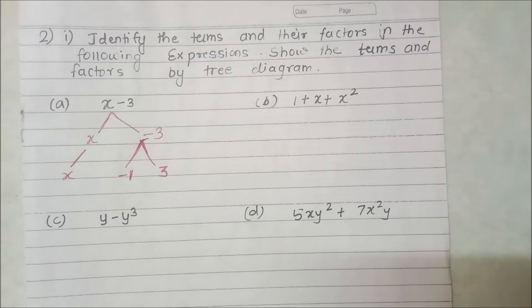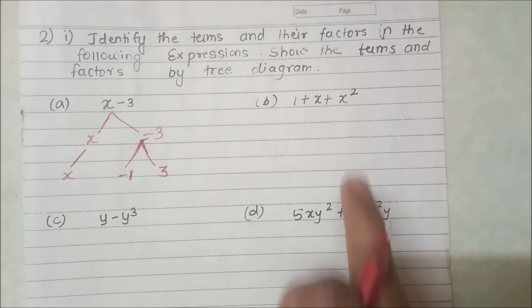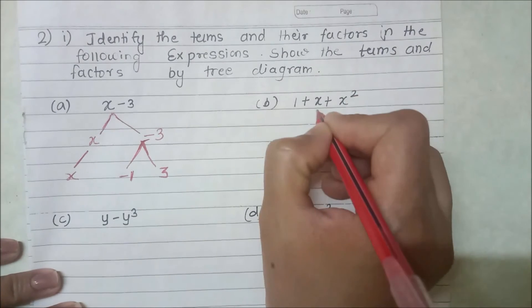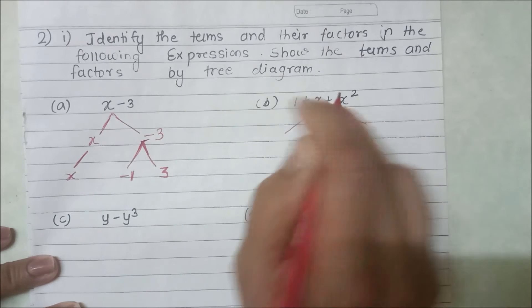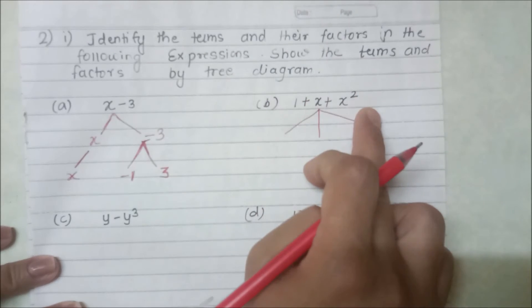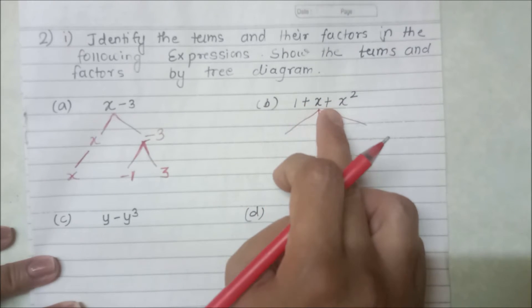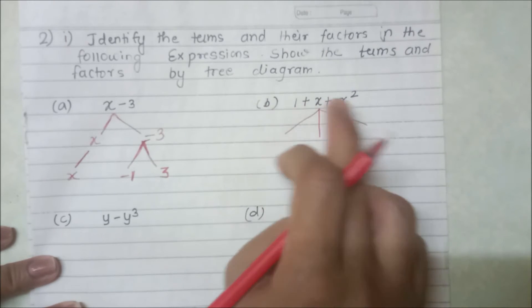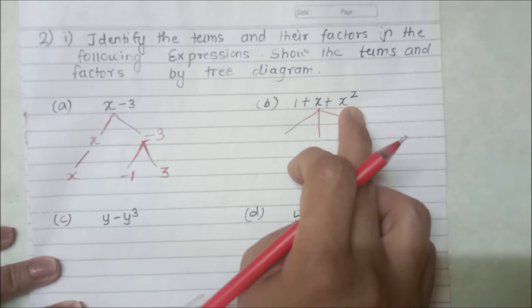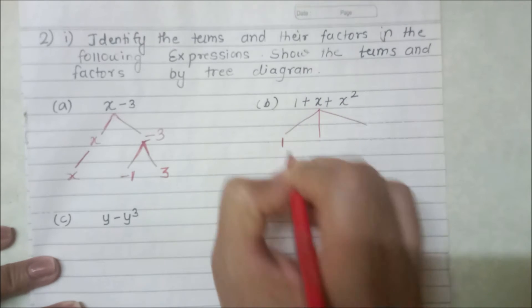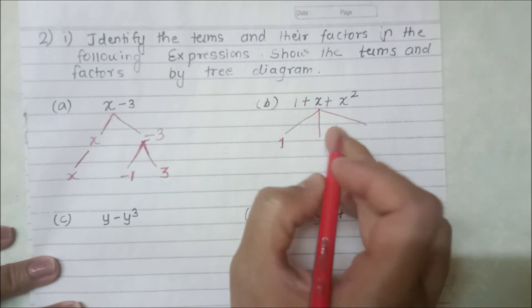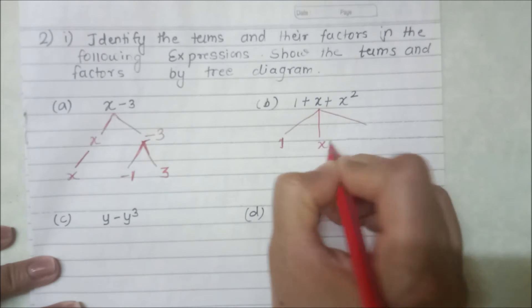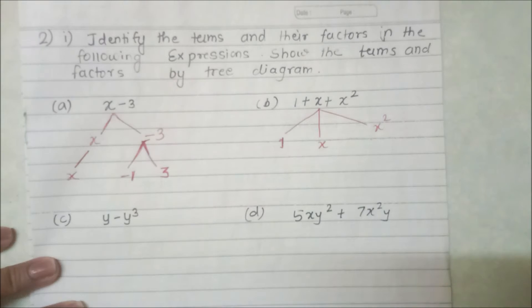Now looking at the next expression, which has 3 terms because there are 2 plus operations. The three terms are 1, x, and x square.